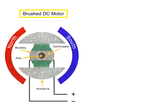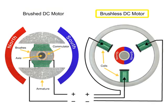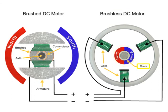Unlike DC brush motors, DC brushless motors do not utilize brushes to control current. Permanent magnets bonded directly to the rotor of the brushless DC motor create rotational motion as current passes through the stator.